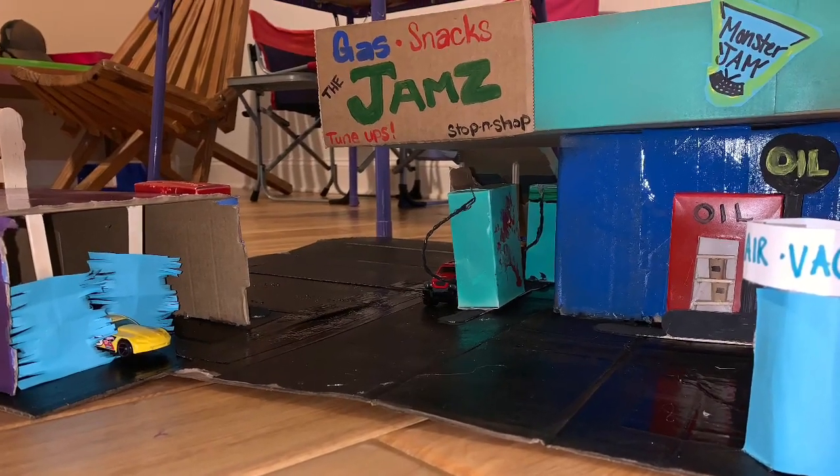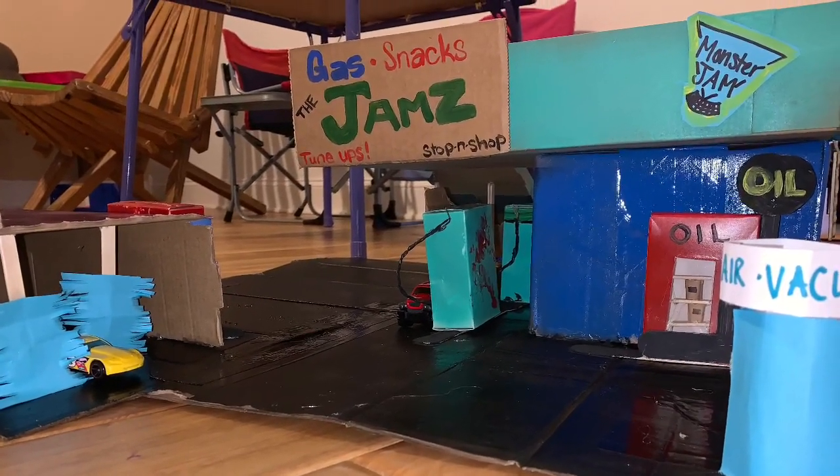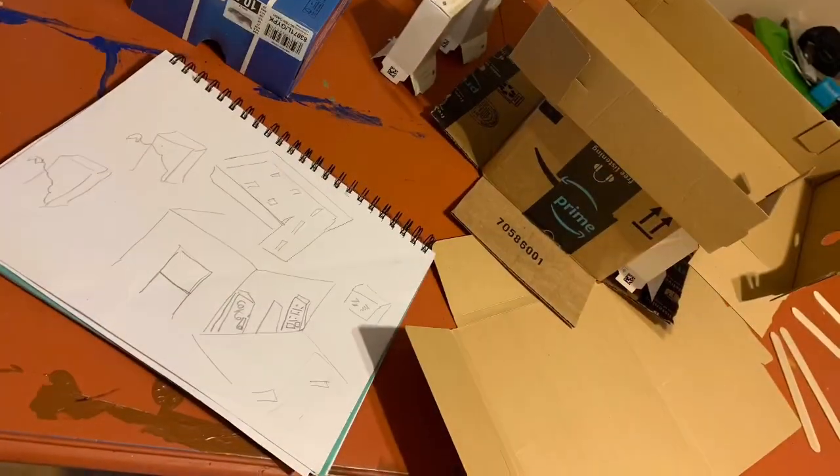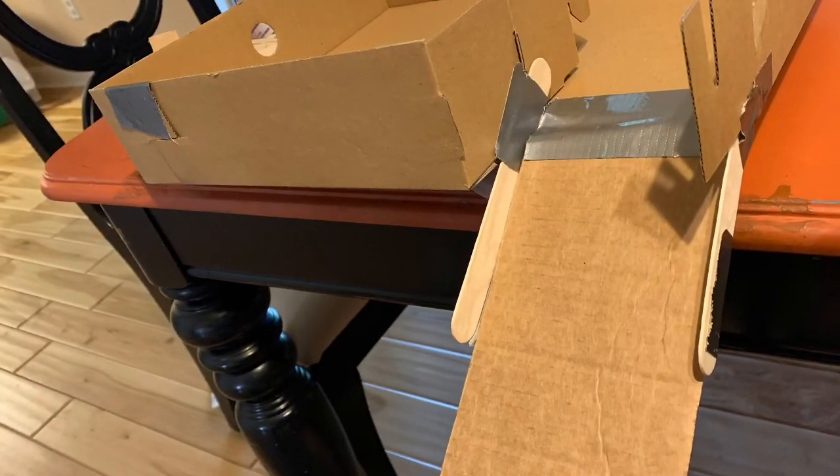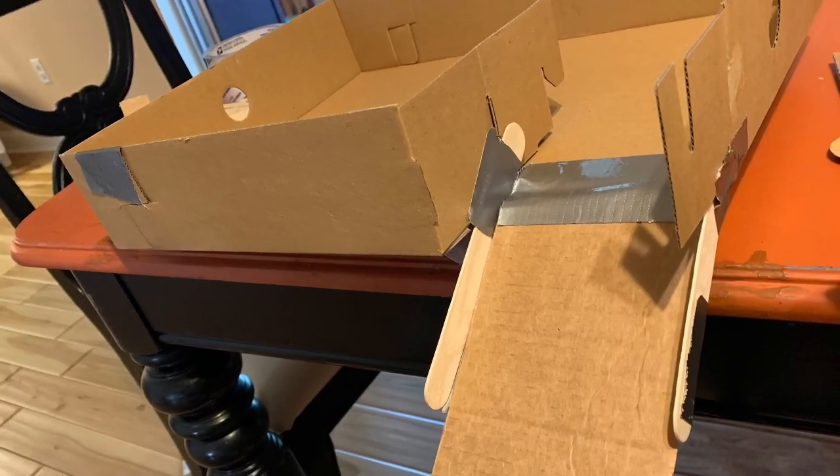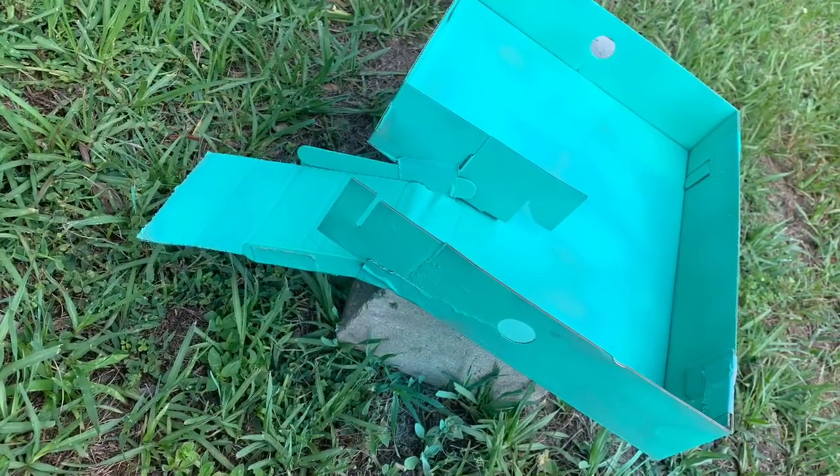Today we're going to make a gas station out of cardboard boxes. So after we plan how we want it to look, we cut it up and tape everything together and bring it outside to start spray painting.